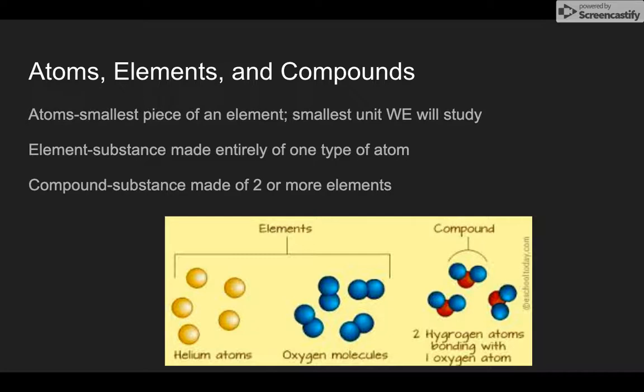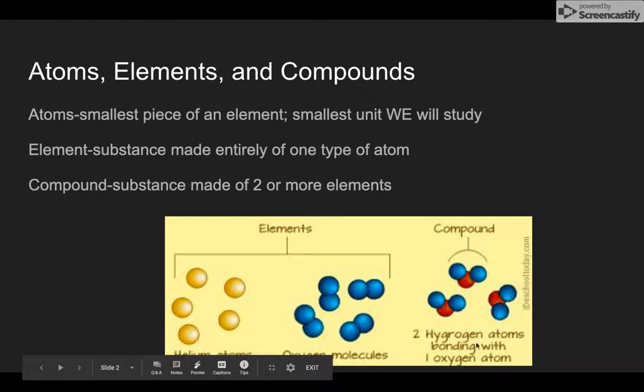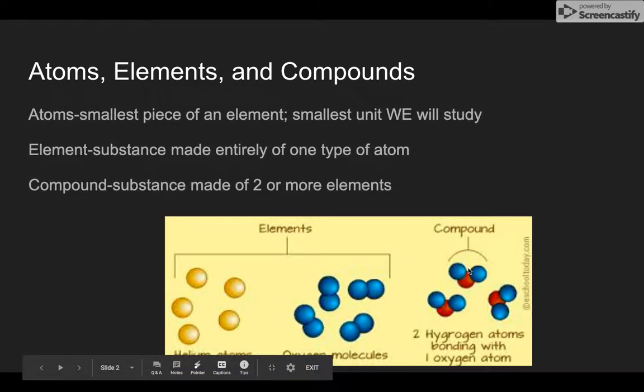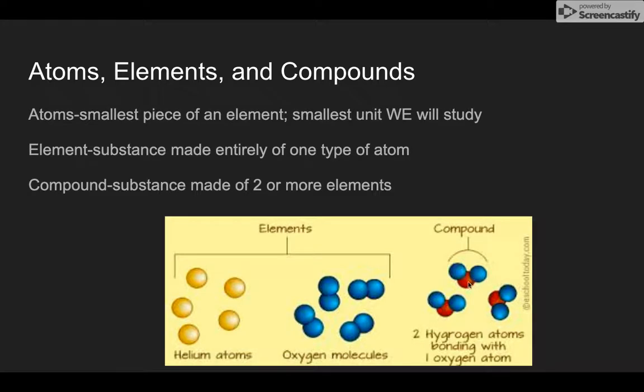Compounds combine two or more elements. So this picture in the bottom, you can see helium is an element, oxygen is an element, but they're both made of individual atoms or molecules. And we're not really going to go into molecules. So just for the sake of this chapter, we're just going to focus on atoms, elements, compounds. And compound there, you can see in the right, where we have two hydrogen atoms bonding with one oxygen atom. So we have two different types of elements making a compound. I know we have three things there, but we have hydrogen, we have two hydrogens, which is one element, and oxygen, which is another element to make our compound.